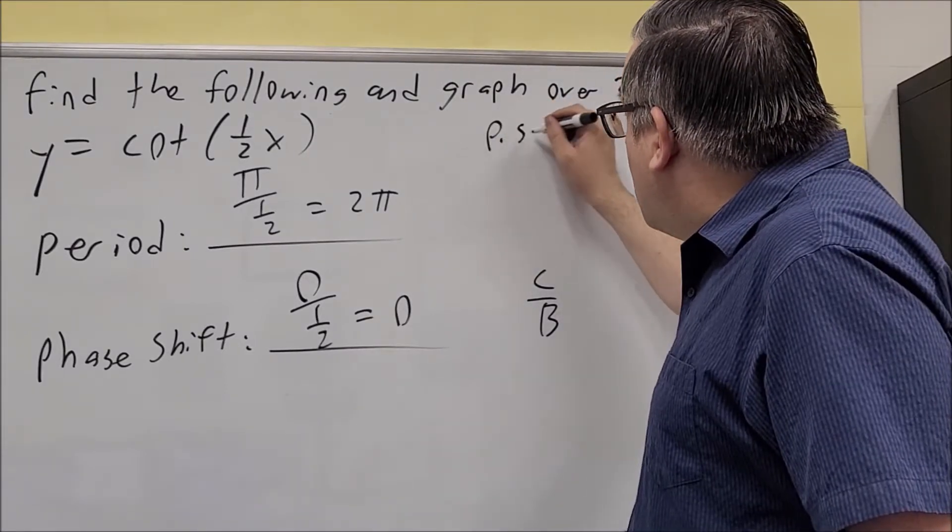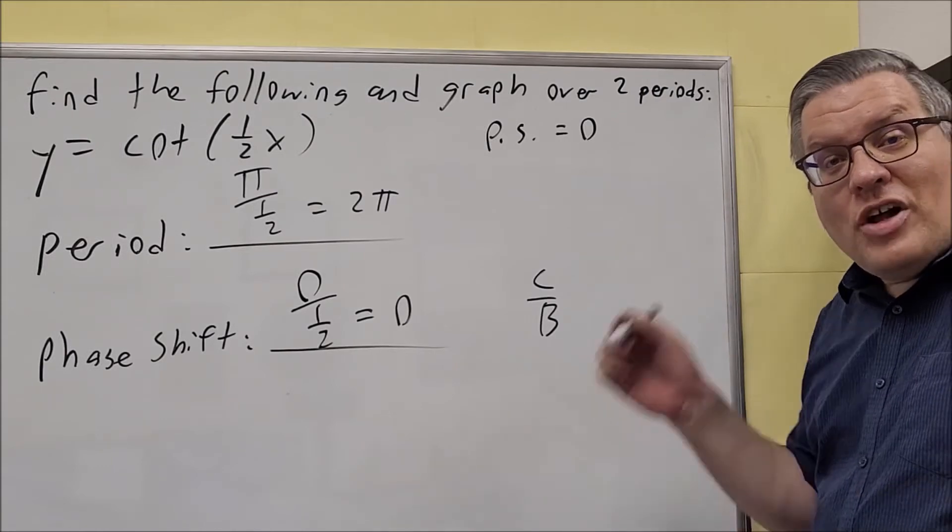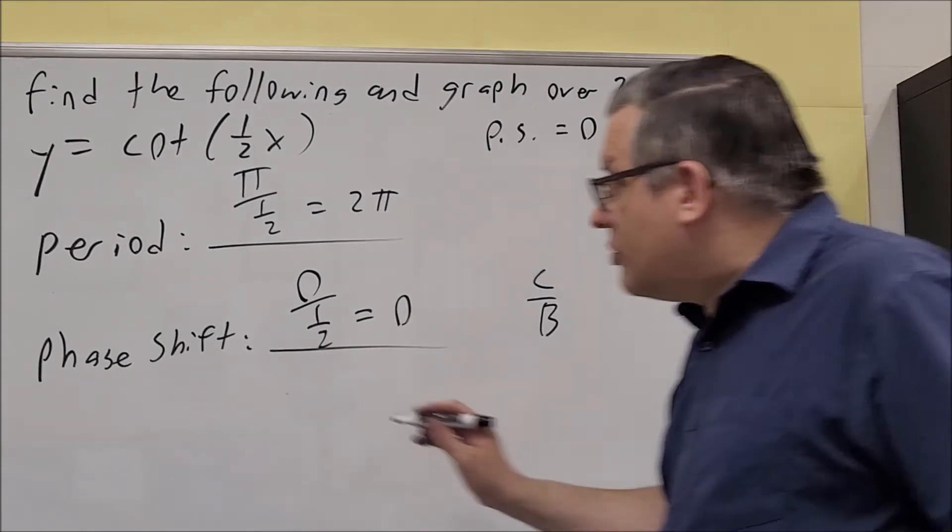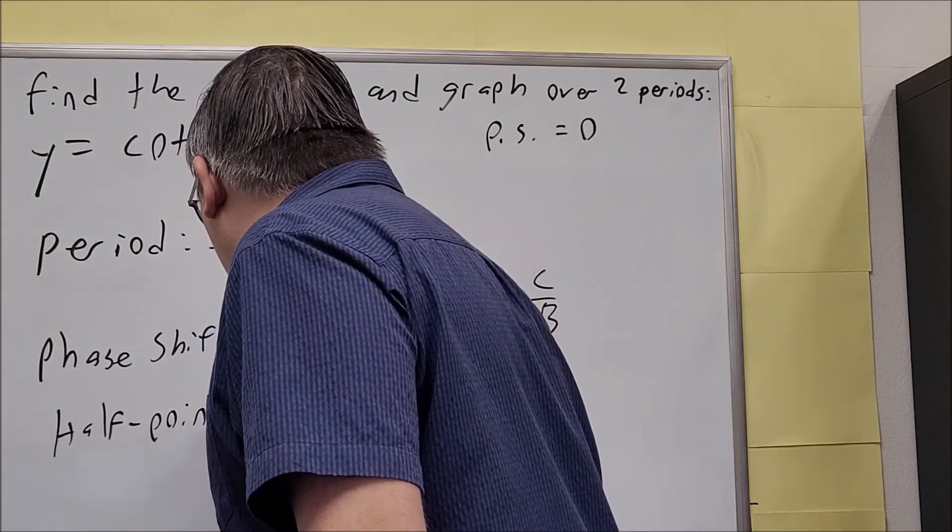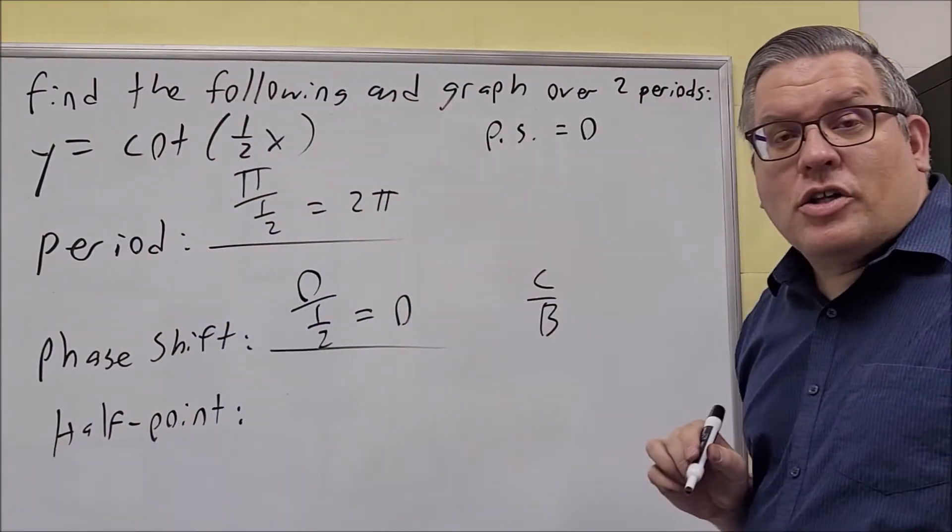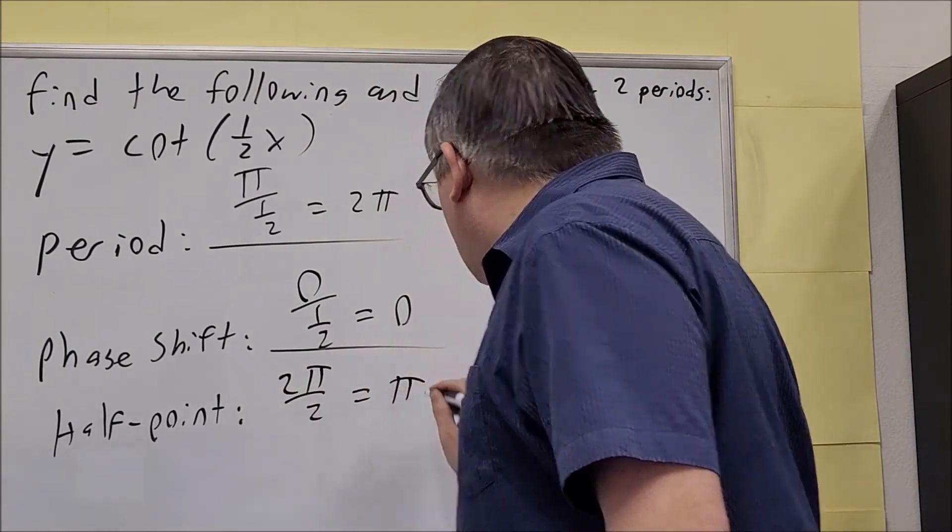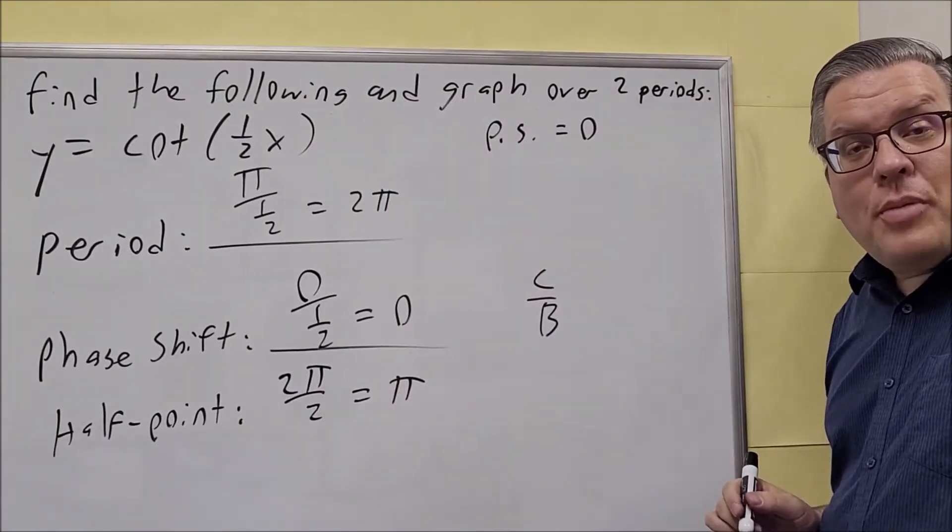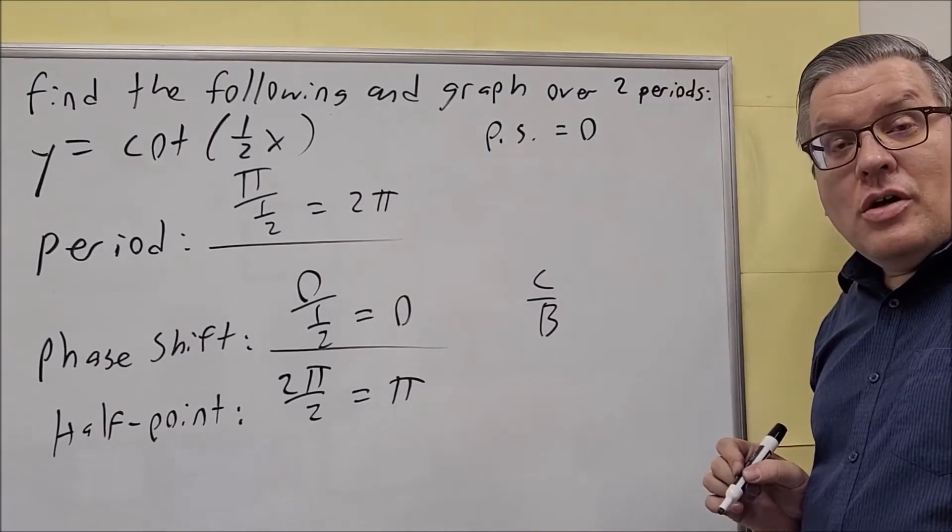So now I know that my phase shift is equal to 0. That's your first key point. To find the other ones, we're going to find our half point. The half point is always your period divided by 2. So 2π divided by 2 gives you π. This π is what we're going to be adding to our phase shift.